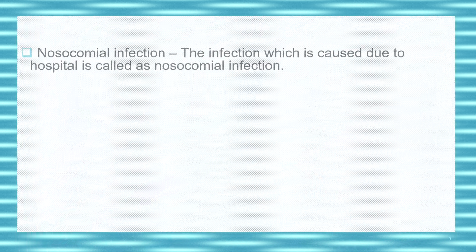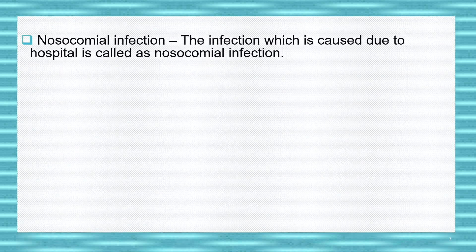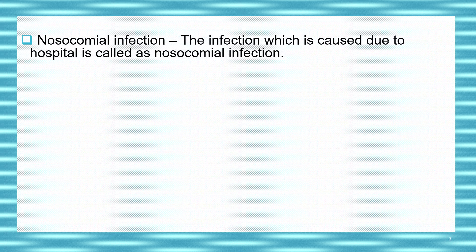Sixth is nosocomial infection. The infection which is caused due to a hospital setting is called nosocomial infection. For example, a healthy person visiting a hospital for a checkup or to visit a patient, if they get infected at the hospital, that is called nosocomial infection.